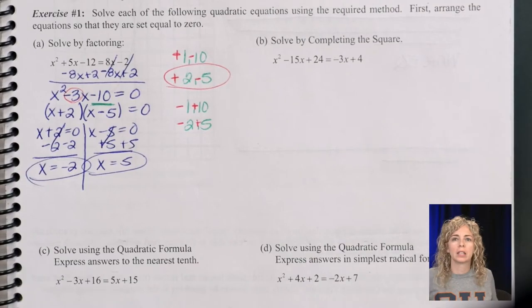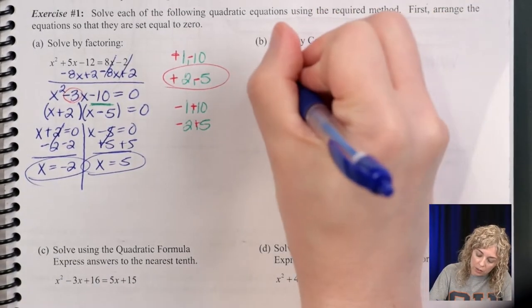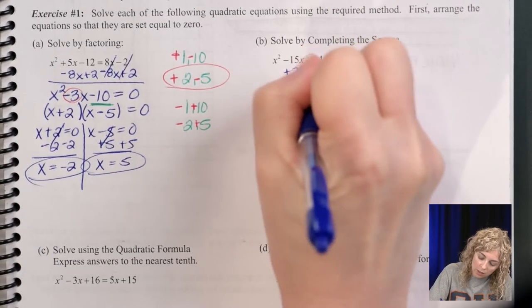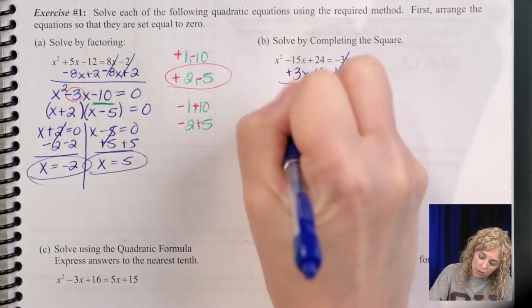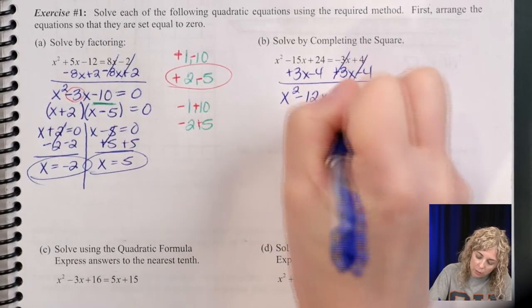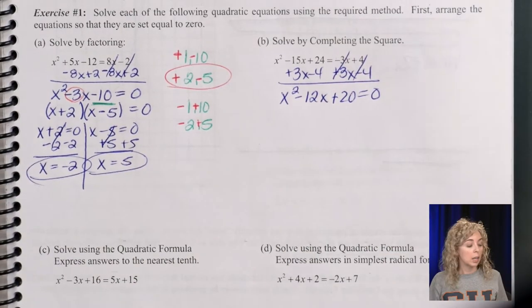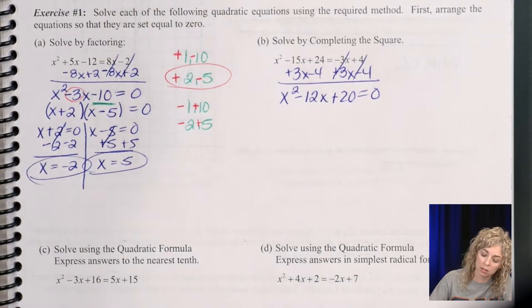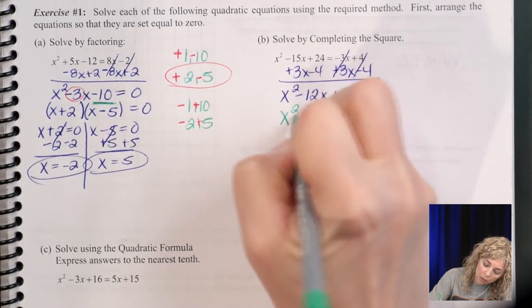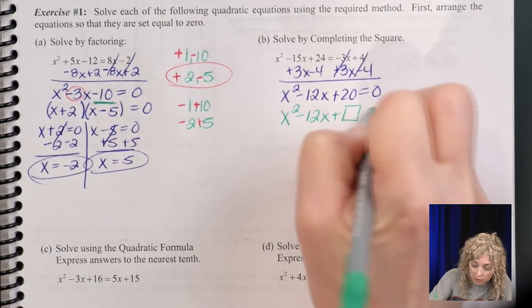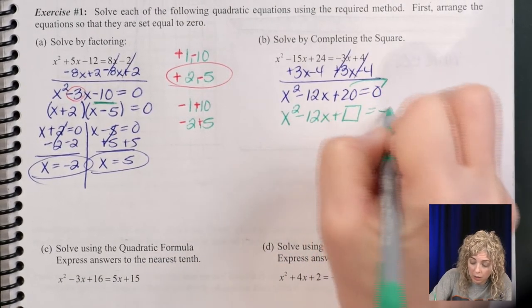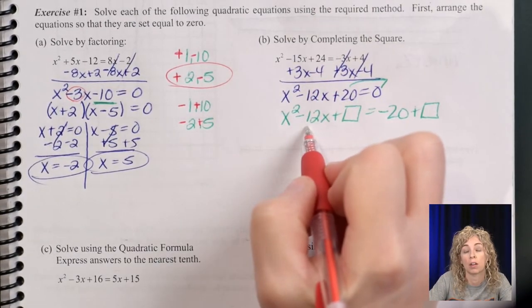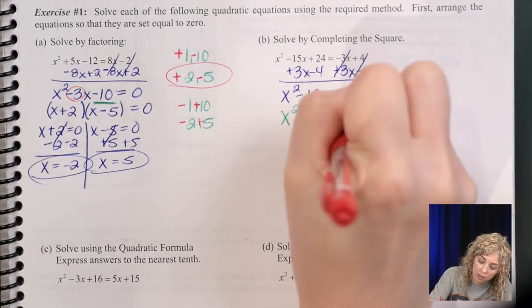Now we're going to solve by completing the square. So again, x squared is positive. I want to add the 3x over, subtract the 4 to get it set equal to 0. So it's x squared minus 12x plus 20 equals 0. Now when we solve using completing the square, we want to move the c, add the boxes. So, comes x squared minus 12x, add the box, move the c, becomes negative, add the box. And then in the box, half of 12 is 6, then 6 times 6, 36.